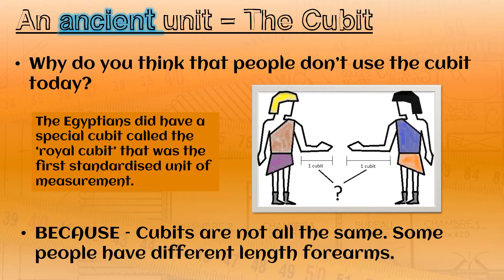Actually, the Egyptians did have a unit called the royal cubit. That was the very first standardized unit of measurement. But overall, we have better units today than the cubit.